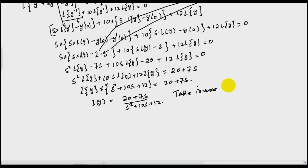Now take inverse Laplace of both sides, similarly as we have done in the log—inverse of log. So what I get: y equals inverse of 20 plus 7s divided by s square plus 10s plus 12. If you are able to find the inverse of Laplace of 20 plus 7s over s square plus 10s plus 12, you will get y.